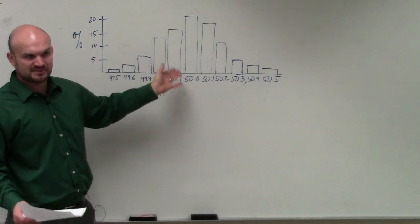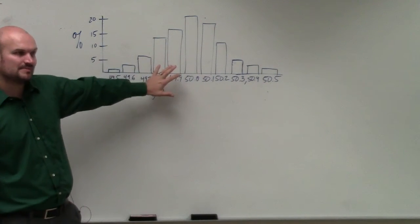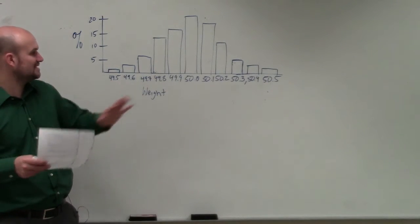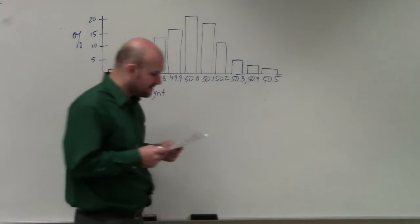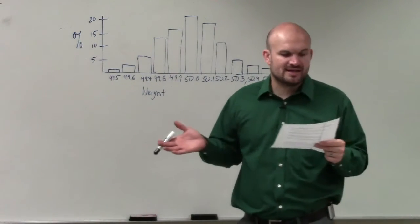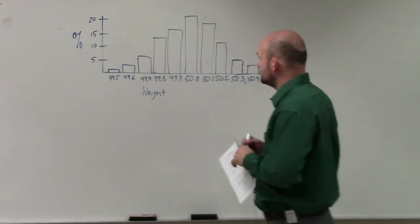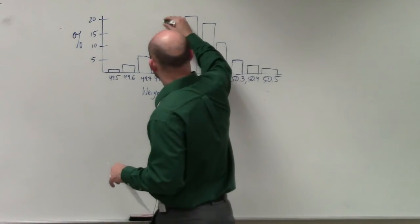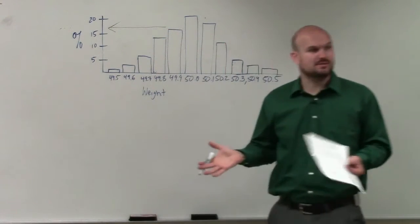So all we need to do is find the percentages for the different weights. We just need to calculate the percentages. Now, my little histogram here is not the best representation, so I'm going to use this to verify. In number two, it says what percent of bags weigh less than 49.8? So they're basically saying, from 49.8 down, what is the percent?